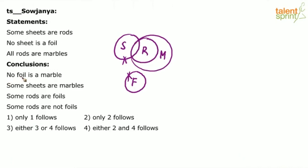Now look at the conclusions. The first one: No foil is a marble. If you look at the basic diagram, no foil is a marble is correct because foils and marbles do not touch each other. But will it always be correct? No. From the given statements, we know that foils cannot touch sheets, but foils can go and touch rods, and foils can go and touch marbles as well. Although it satisfies the basic diagram, no foil is a marble is a wrong conclusion because I can draw possible diagrams where foils will overlap with marbles or foils will overlap with rods. The only thing we have to keep in mind is foils cannot overlap with sheets, but they can overlap with rods and marbles. That is the reason conclusion number one is wrong.